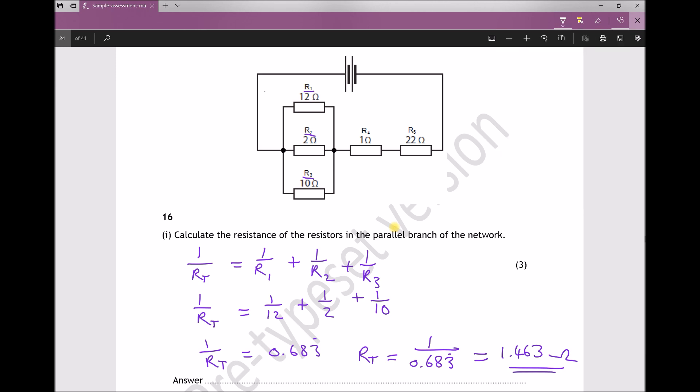So we take out R1, R2 and R3, and in its place we have this new resistor. We can call it R123 because it's a combination of those three resistors and it has a resistance of 1.463 ohms.